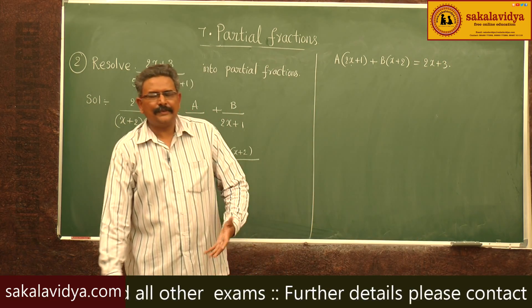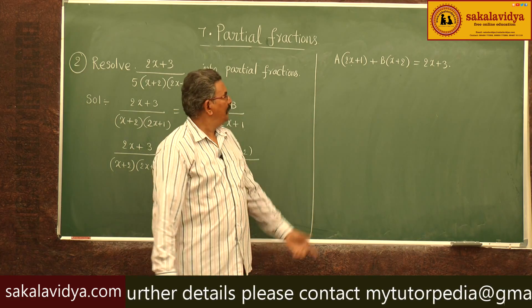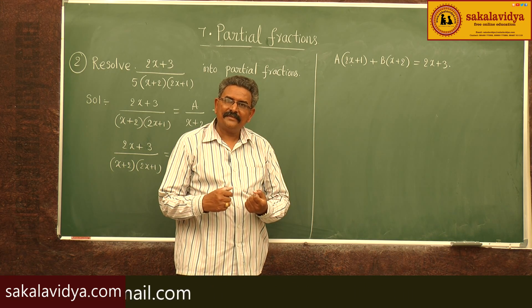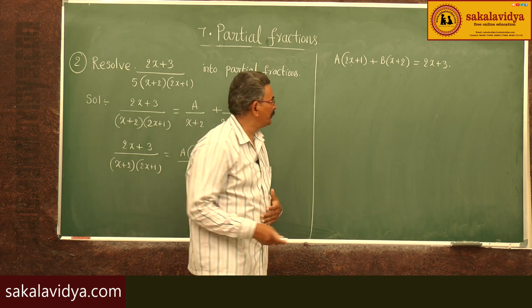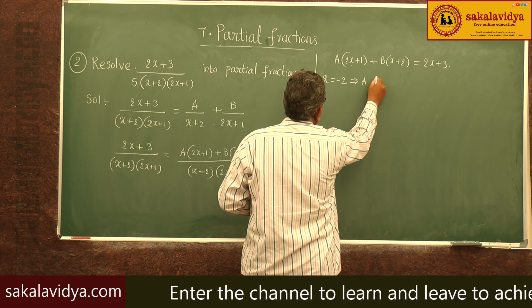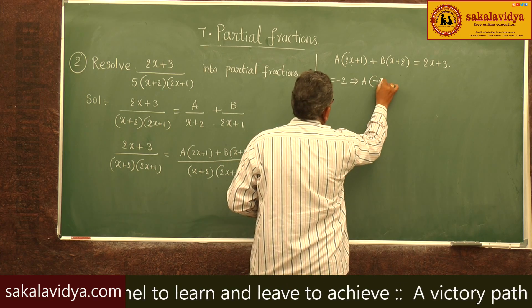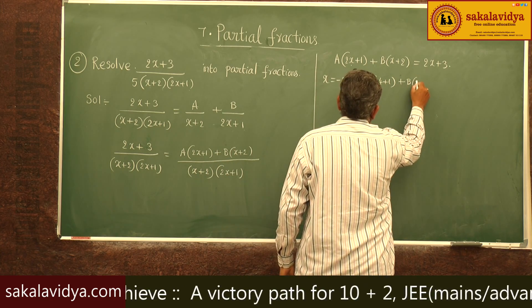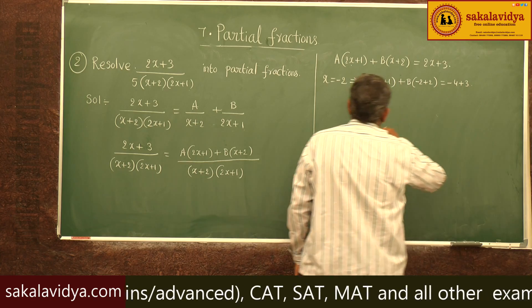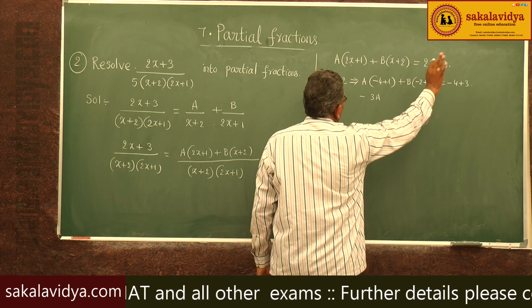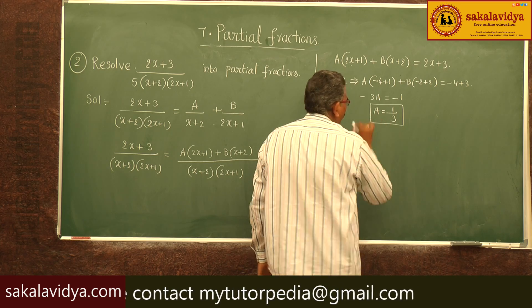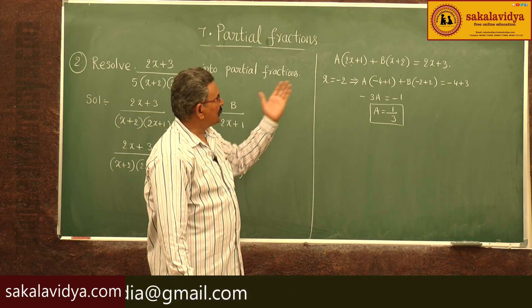Now, let us pose some questions. What is the zero of (x+2)? The zero of (x+2) is minus 2. So let us substitute x = -2. We get A(-4+1) + B(-2+2) = -4+3, which gives -3A = -1, so A = 1/3. Now A value has been determined.